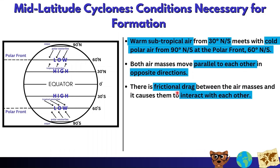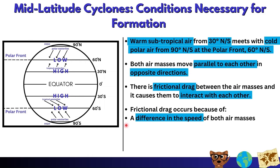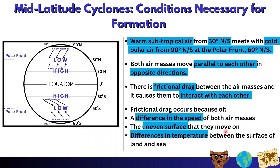There is frictional drag between the air masses, causing them to interact with each other. There are three reasons why frictional drag occurs: first, a difference in speed between the air masses — cold air is denser and moves faster than warm air; second, the uneven surface they move on; and third, differences in temperature between the surface of land and sea.